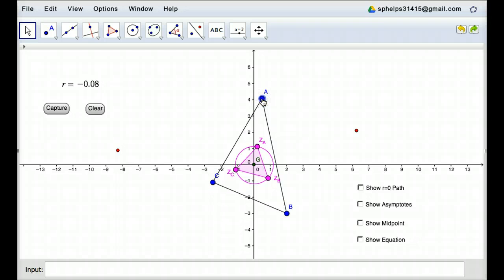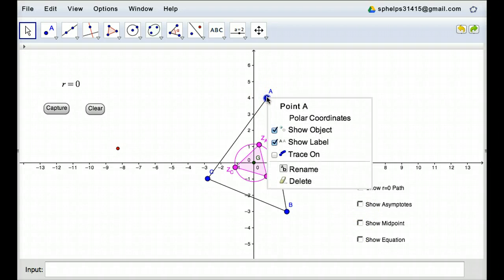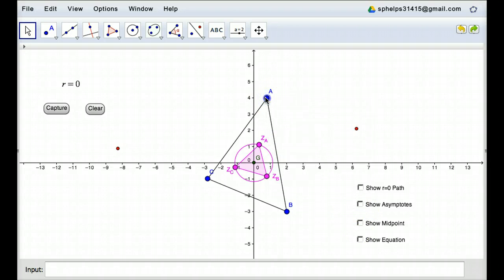There you go. So I'm getting somewhere, so let's see what happens. And so that's pretty good. Oh, there's zero. So let me capture that. And then I'm going to see if I can find some other points where the correlation coefficient is also zero.